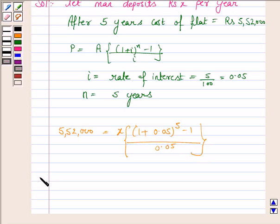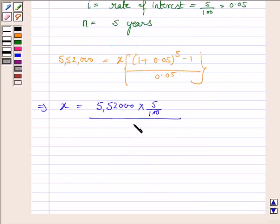So this implies x is equal to 5,52,000 into 0.05, which is same as 5 upon 100, divided by (1.05) to the power 5 minus 1.